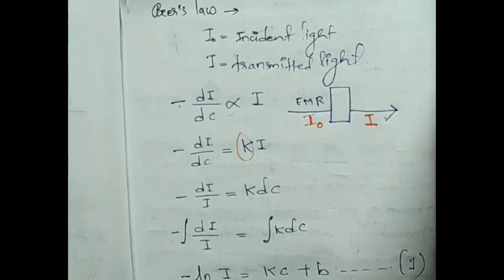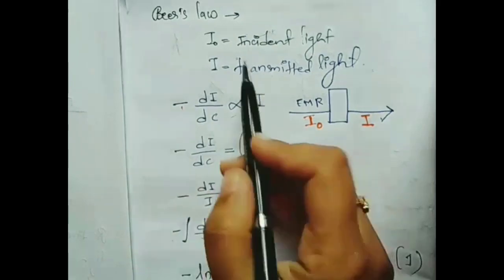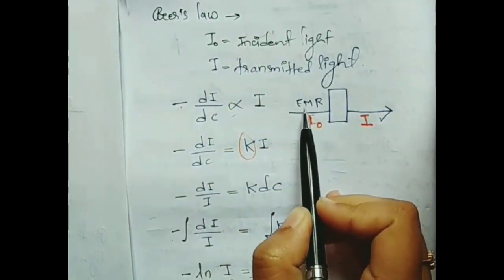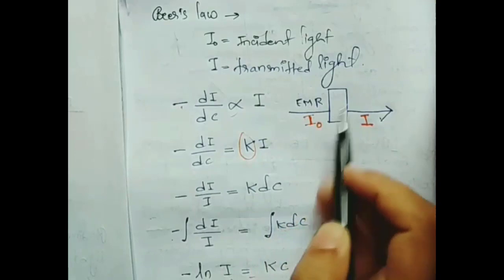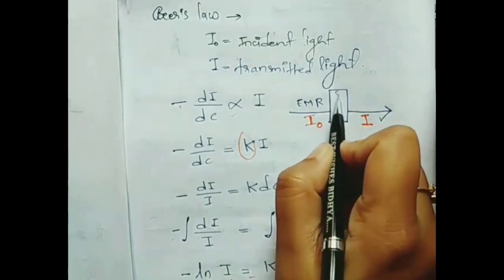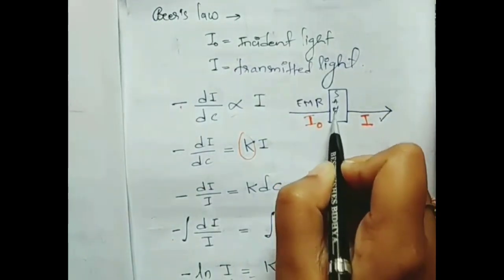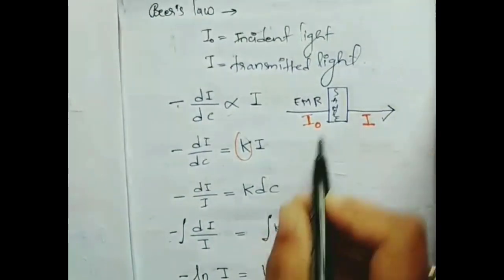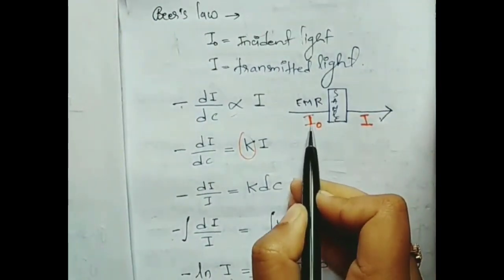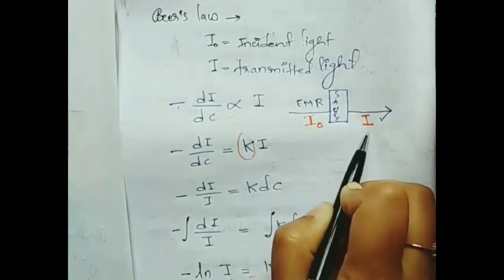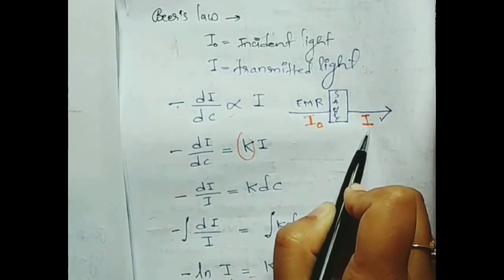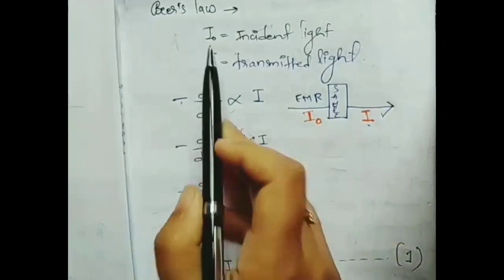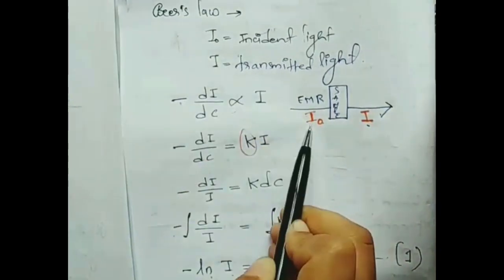I will be talking about the derivation for Beer's law and Lambert's law when electromagnetic radiation passes through a sample. I naught is your incident light and I is your transmitted light, so we will start with I naught as incident light.